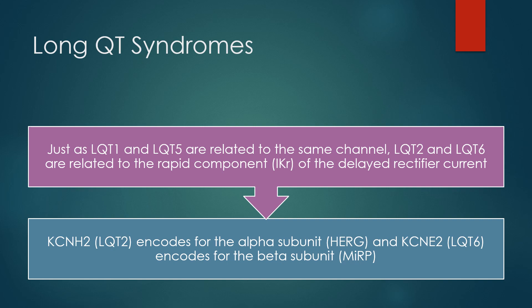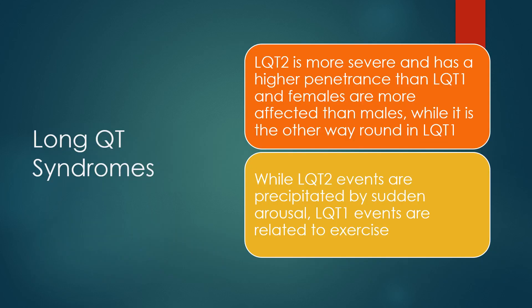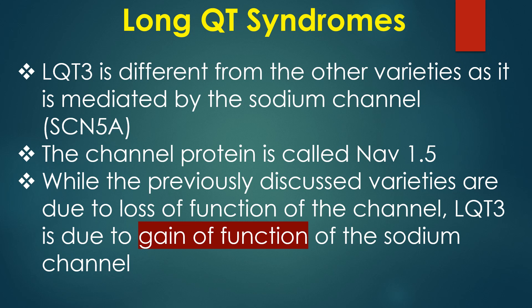LQT2 is more severe and has higher penetrance than LQT1; females are more affected in LQT2 while males are more affected in LQT1. LQT2 events are precipitated by sudden arousal while LQT1 events are related to exercise. LQT3 is different from the other varieties as it is mediated by the sodium channel — the channel protein NAV1.5. While the other varieties are due to loss of function, LQT3 is due to gain of function of the sodium channel. The allelic disorder due to loss of sodium channel function is Brugada syndrome.